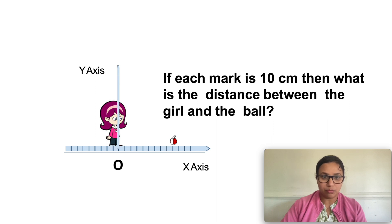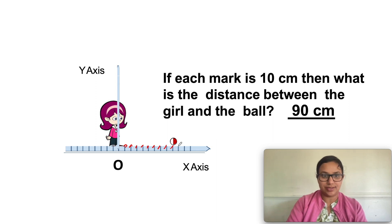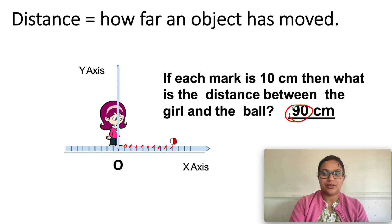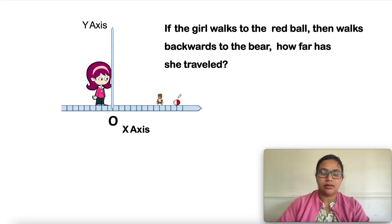Consider another example: if each mark is 10 centimeters, what is the distance between the girl and the boy? Counting the marks: 1, 2, 3, 4, 5, 6, 7, 8, 9 — so 9 into 10 is 90 centimeters. The magnitude is 90 centimeters. Distance is simply how far an object has moved; it can be measured in kilometers, meters, centimeters, or millimeters.